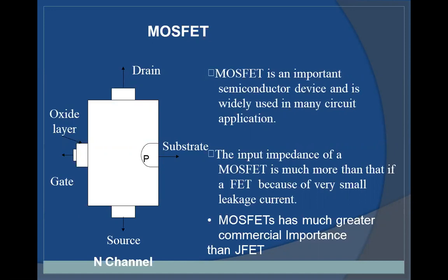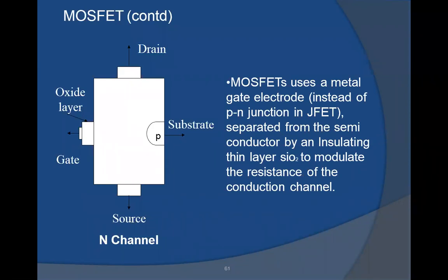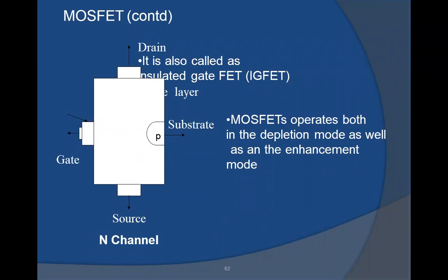You can see the symbol of MOSFET in the N-type channel. MOSFET can be used in any of the circuit configurations used for JFET, so all equations apply equally well to MOSFET and FET in amplifier connection. MOSFET uses a metal gate electrode instead of a PN junction as in JFET, which is separated from the semiconductor by an insulating thin layer of SiO2 to modulate the resistance of the conduction channel. This is why it is called an insulated gate FET.